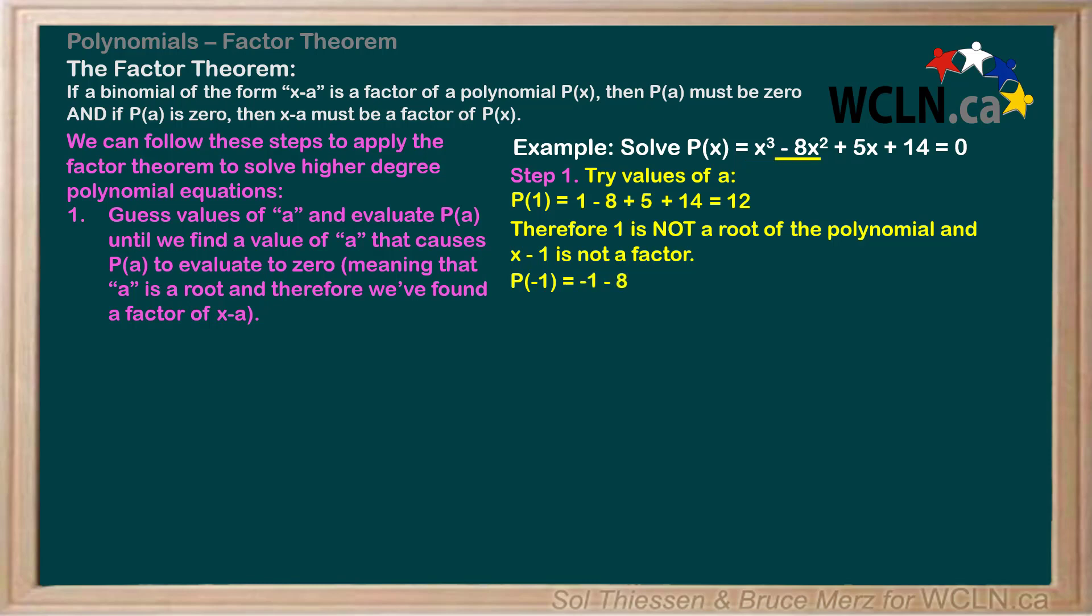Negative 8 times negative 1 squared is negative 8 since negative 1 squared is positive 1. 5 times negative 1 is negative 5, and the 14 stays as is. Negative 1 minus 8 minus 5 plus 14 is 0. Therefore, negative 1 is a root of the polynomial and x minus negative 1, which is equal to x plus 1, is a factor. Step 1 is now complete.